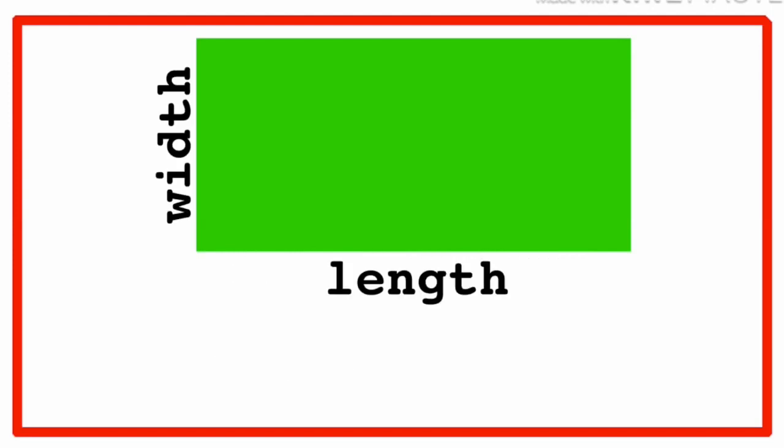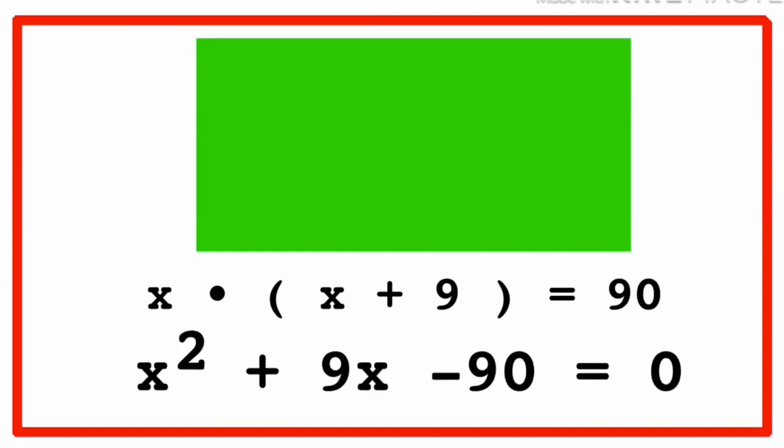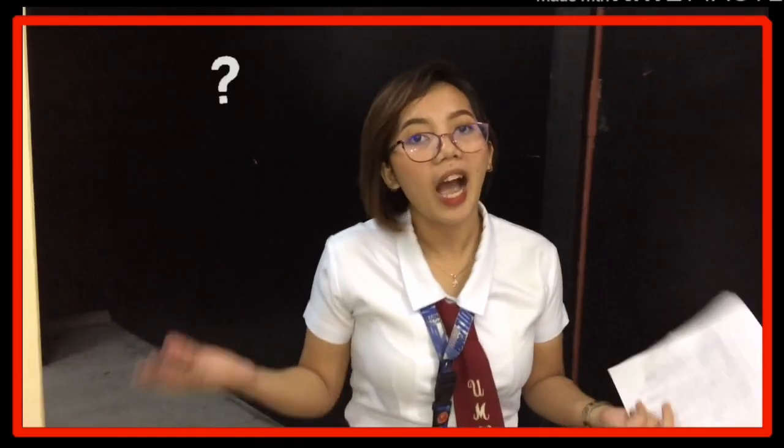We all know that in getting the area of a rectangle is length times width. Now, we get x multiplied by quantity x plus 9 is equals to 90. Rewriting this will give us a quadratic equation as x squared plus 9x minus 90 equal to zero. But how we will get the value of x? That's what we will learn for the next video. Thank you for watching!